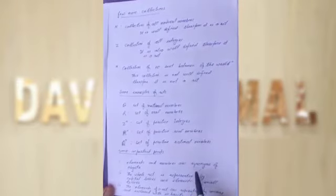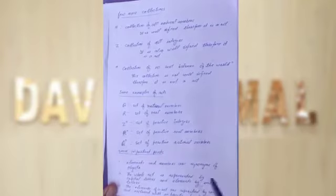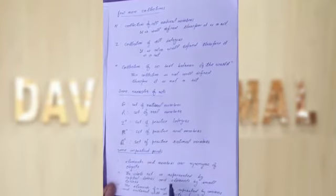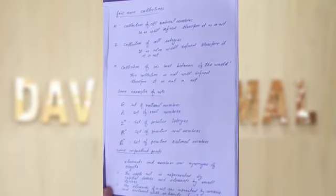Some important points: first, elements and members are synonyms of objects — we will use these terms interchangeably. Second, the whole set is represented by capital letters and elements by small letters. Third, elements of a set are separated by commas.